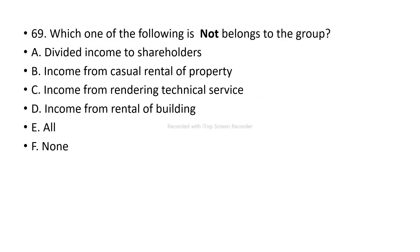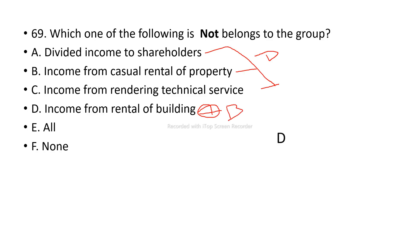Next question: which of the following does not belong to the group? The choices are dividend income, income from casual rental, income from rendering services, and income from rentals of a building. Income from rental of a building falls under a different schedule, so it is the answer — it does not belong to the listed group.